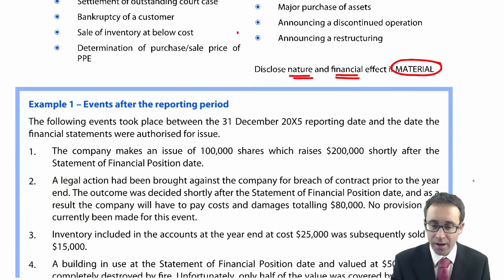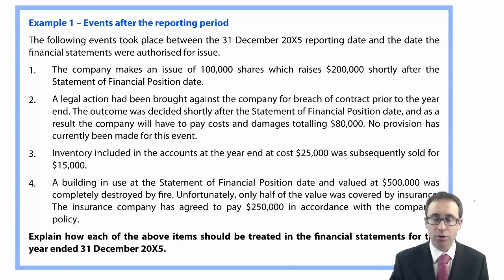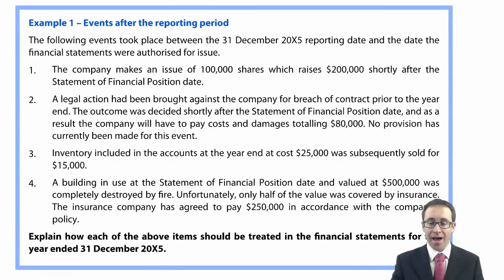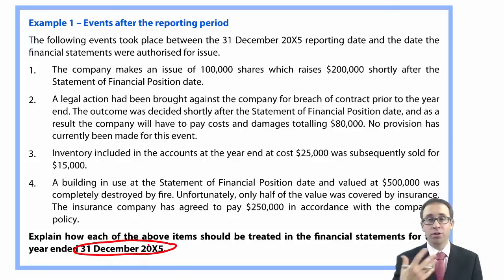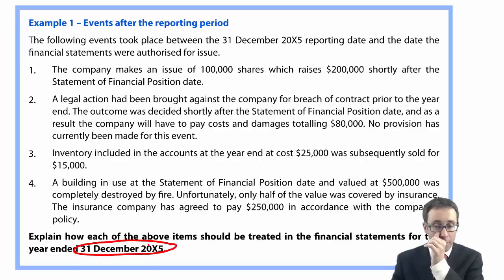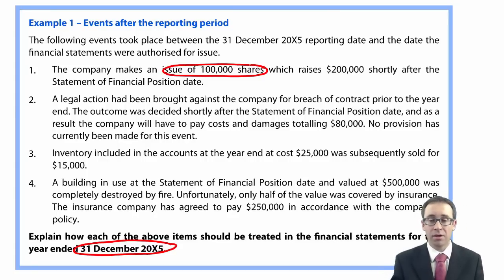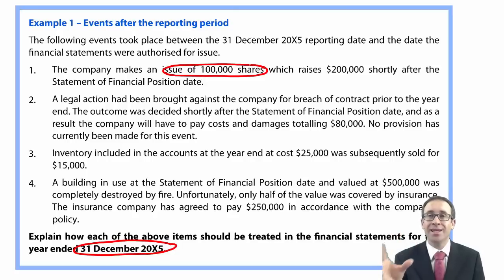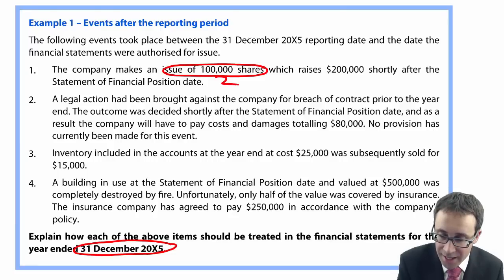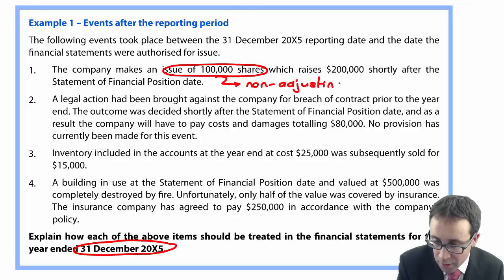The example looks at some events after the reporting period for the year ended December X5. We need to explain how each item should be treated in the financial statements. Number one: the company makes an issue of 100,000 shares, raising $200,000 shortly after the statement of financial position date. The shares weren't in issue at the reporting date, so the condition did not exist. Any issue of shares is therefore classified as a non-adjusting event.